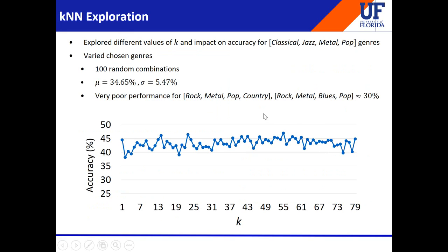Another parameter we varied was the value of K for the KNN classifier. We chose different values of K for the classical, jazz, metal, and pop genre subset, and the accuracy stayed more or less similar. For this particular dataset, K does not really affect the accuracy of the system too much.